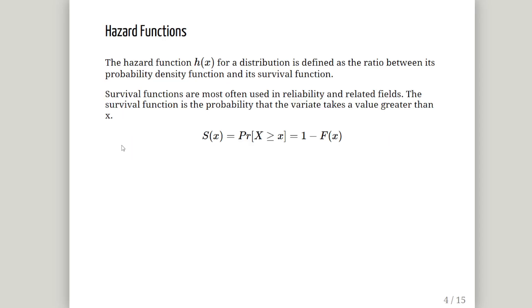So what is a hazard function? It is defined as the ratio between the probability density function and its survival function. Survival functions are commonly used in Reliability and Survival Analysis and related fields. The survival function is a probability that the variant takes a value greater than X. So essentially it is the complement of the cumulative distribution of X - the cumulative distribution function, 1 minus F of X.